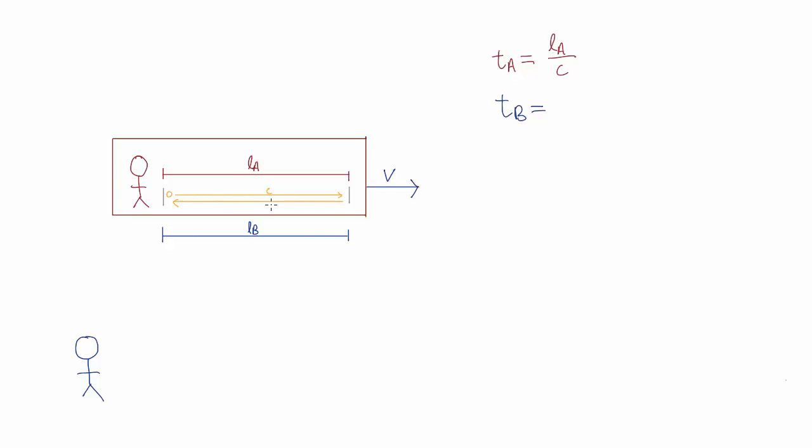And the same for the trip to the left. Therefore, TA is given by 2LA over C.